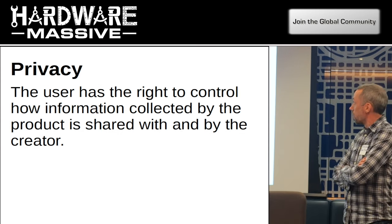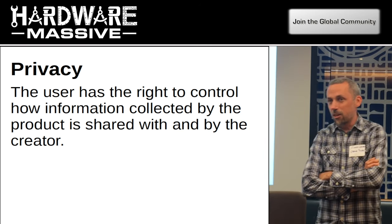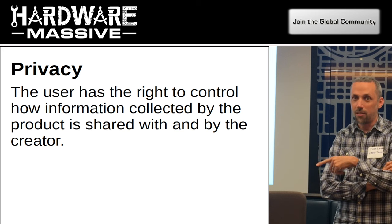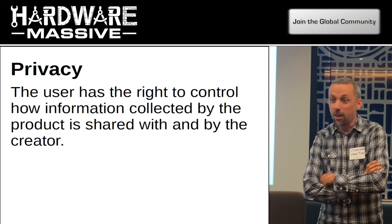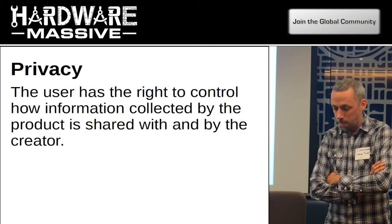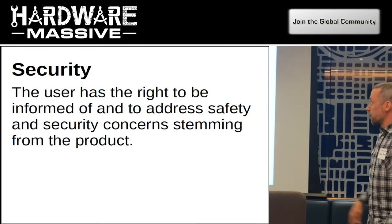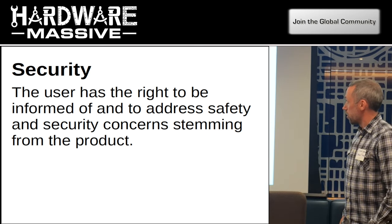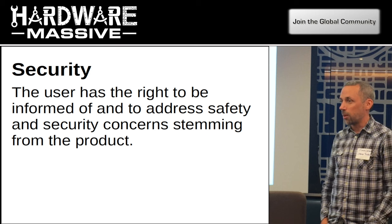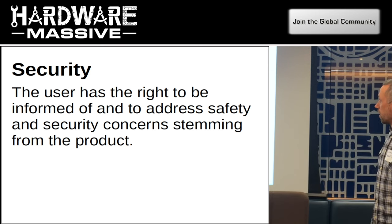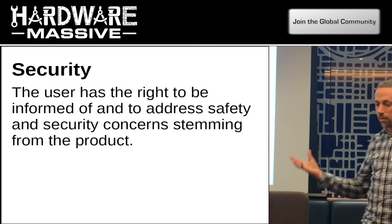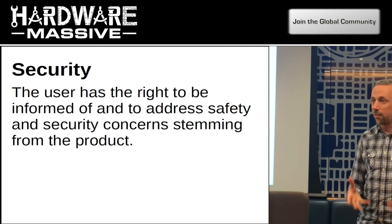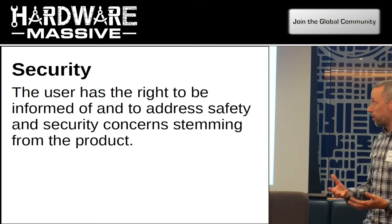Finally, privacy and security: I need to know what's being collected about me, because more and more the value of a product isn't the money I paid for it but the information it's gathering and sending back — Nest sending data to Google, for example. A close cousin is security. When these things go wrong, it can go horribly wrong. As an owner I expect to be informed in a timely manner of security holes with enough time to fix them. That's the general set of eight principles we've thought and analyzed a lot, boiled down to what we'd like all products to abide by and all creators to stand behind.